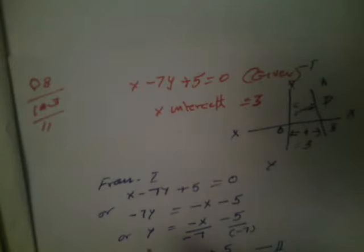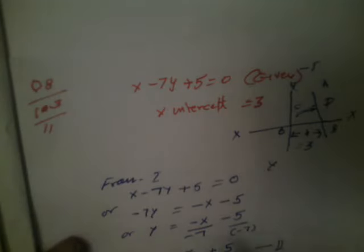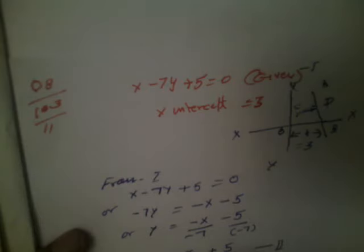So from equation 1, we will convert it into the form of y is equal to mx plus c. So x-7y+5 is equal to 0, or minus 7y becomes — other things will go to the right side — minus x minus 5, or y is equal to minus x divided by minus 7, minus 5 divided by minus 7. So y is equal to x by 7 plus 5 by 7. This is equation number 2.